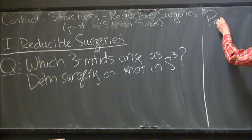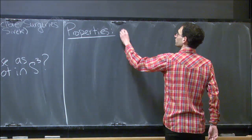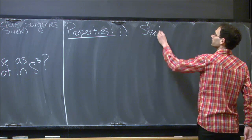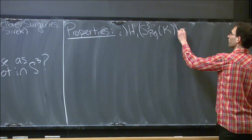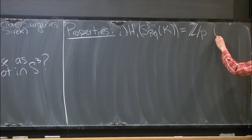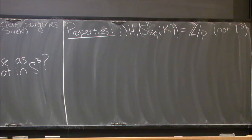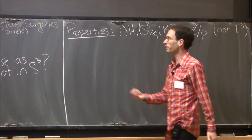Let's start with some basic properties of Dehn surgery. If we do p/q surgery on a knot K and look at the first homology, we know it's cyclic of order p. So we already have some constraints on the three-manifolds we can get—for instance, we can't get T³. We know from Lickorish and Wallace that we can get every three-manifold by surgery on some link in S³, so this is sort of the first step to understanding three-manifolds.